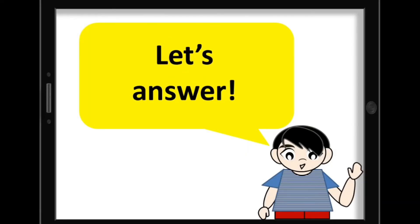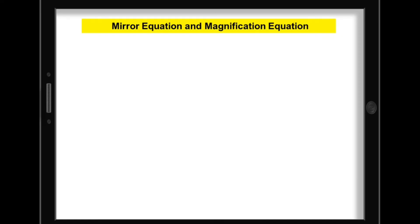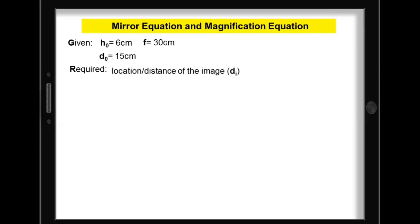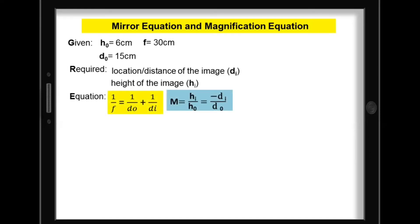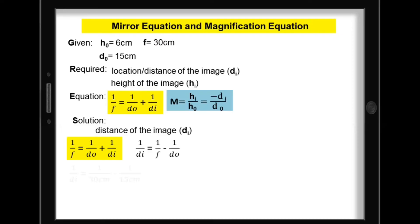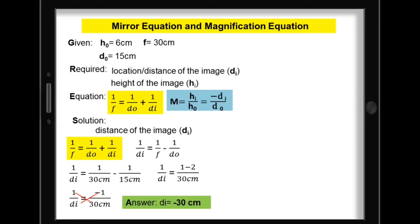Let's answer. The given: height of object 6 cm, distance of object 15 cm, and focal length is positive 30 cm since it's a concave or converging mirror. We need the location and height of the image. Using the derived mirror equation: substituting values gives 1 minus 2 over 30 cm, which equals negative 1 over 30 cm. Cross-multiplying, the distance of image is negative 30 cm — meaning it's virtual and formed behind the mirror.